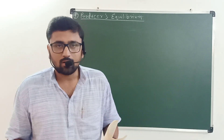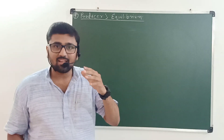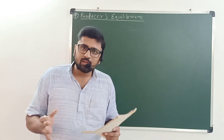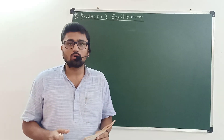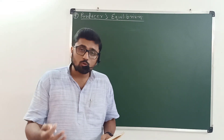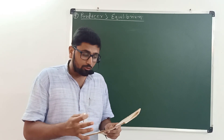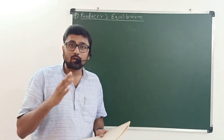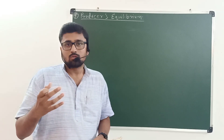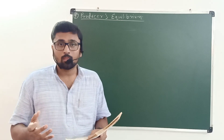In this video, I am going to explain the concept of producer's equilibrium. The primary objective of any firm or any producer is to maximize the profit. A producer is seen to be in equilibrium when he attains maximum profit from given cost or given output, and to attain this maximum profit, he or she needs to choose the appropriate combinations of factors of production.